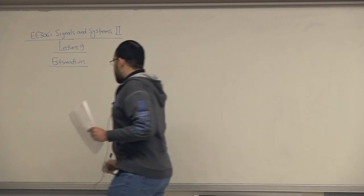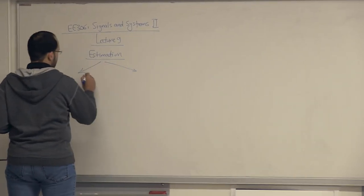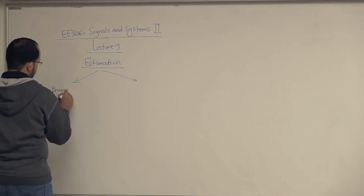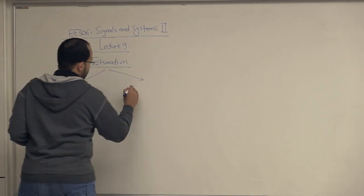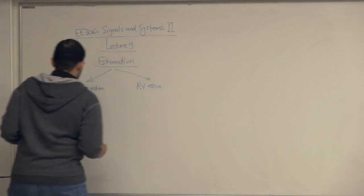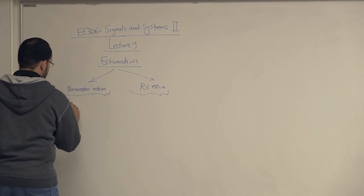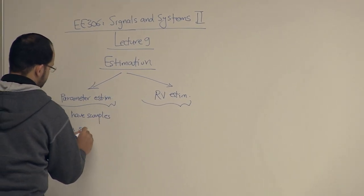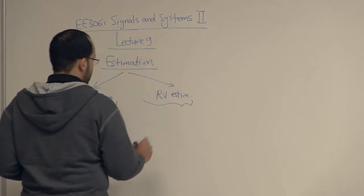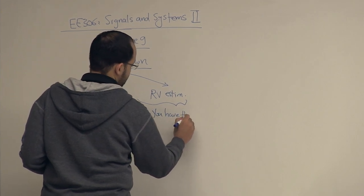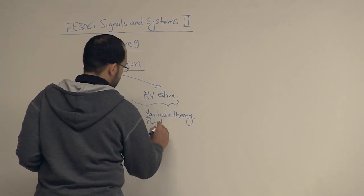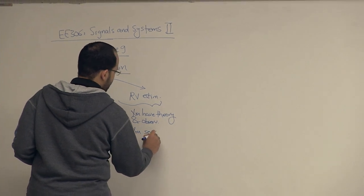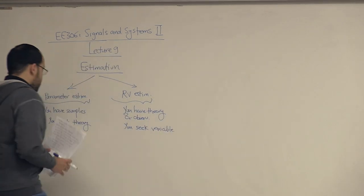The first step in order to have a discussion in that regard will be to look at estimation. There are two types of estimation we will talk about today: parameter estimation and random variable estimation. For the parameter estimation case, you have samples of random variables and you seek the theory. For the random variable estimation case, you have the theory and an observation, and you seek the variable.